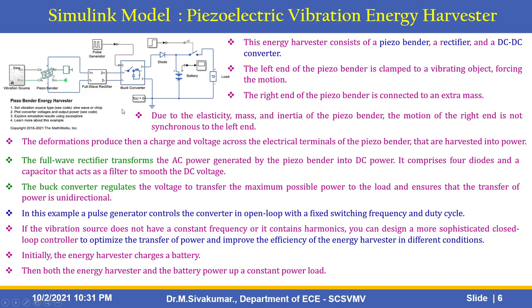The energy harvester consists of the piezo-bender, a rectifier, a DC-to-DC converter, and a buck converter. The left-hand side of the piezo-bender is clamped to a vibrating object, forcing the motion. The right-hand side of the piezo-bender is connected to an extra mass. Due to the elasticity, mass, and inertia of the piezo-bender, the motion of the right hand is not synchronous to the left hand, so deformations produce a charge and voltage across the electrical terminals that are harvested into power.